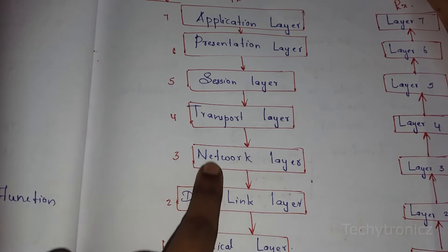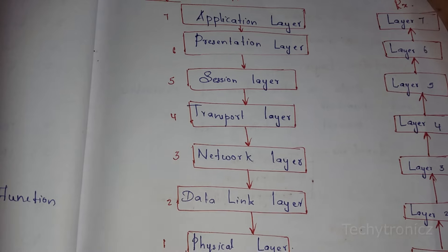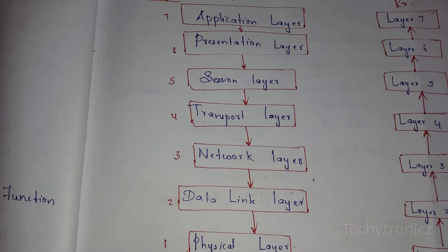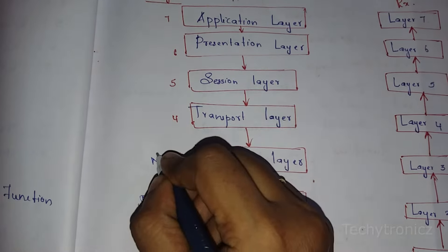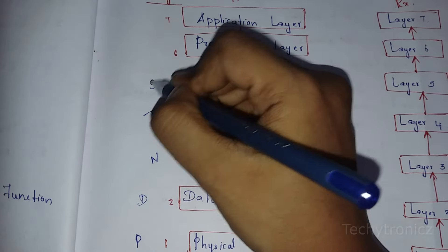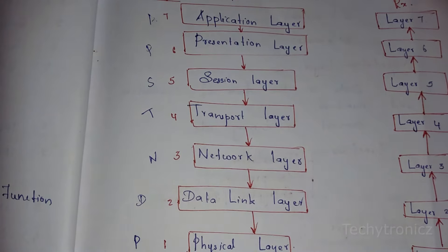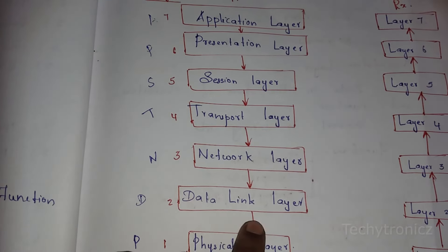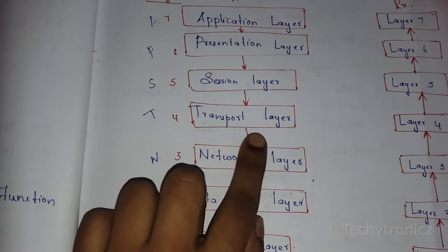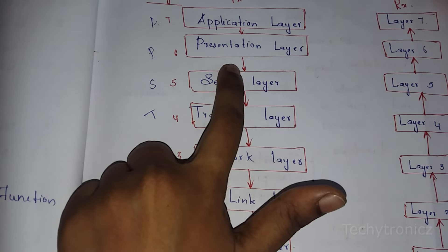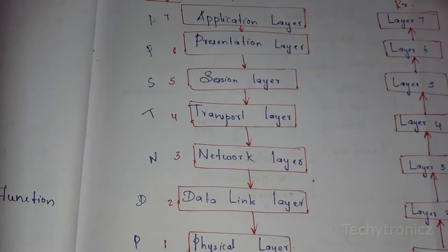To remember the order more easily, use the mnemonic: 'Please Do Not Touch Steve's Pet Alligator.' P for physical layer, D for data link layer, N for network layer, T for transport layer, S for session layer, P for presentation layer, and A for application layer.